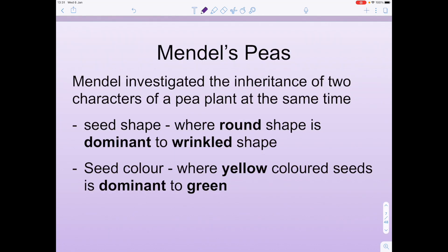Hopefully you've met Gregor Mendel before — he was a monk who was basically the forefather of inheritance. He studied peas. Mendel investigated the inheritance of two characteristics of pea plants at the same time.